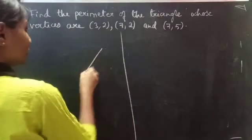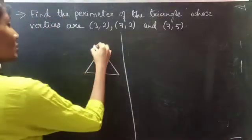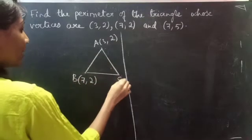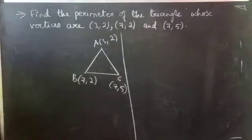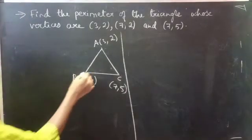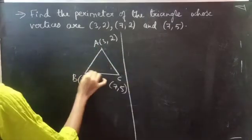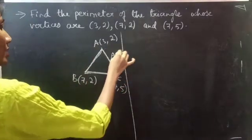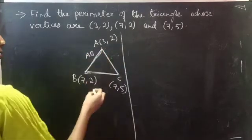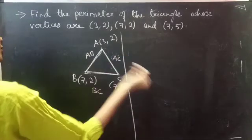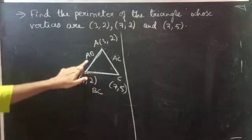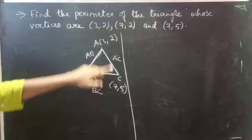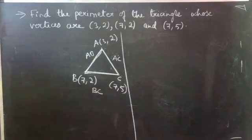So let us consider a triangle with vertices A(3, 2), B(7, 2), and C(7, 5). We need to find the perimeter — that is, the boundary of the triangle — which means AB plus BC plus AC. So if we add AB plus BC plus AC, we get the perimeter of triangle ABC.